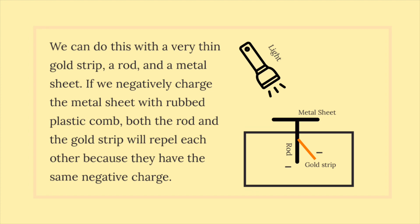A rod and a metal sheet. If we negatively charge the metal sheet with a rubbed plastic comb, both the rod and the gold strip will repel each other because they have the same negative charge.